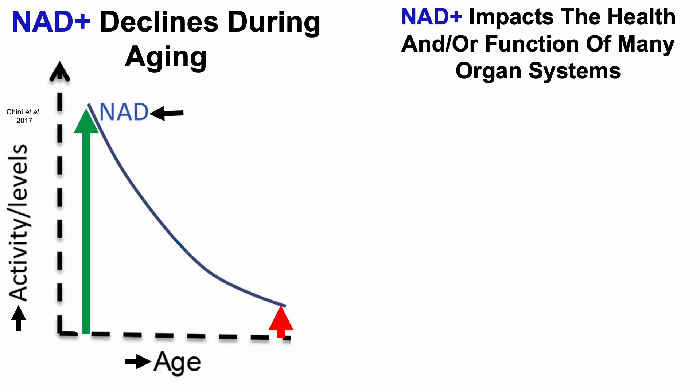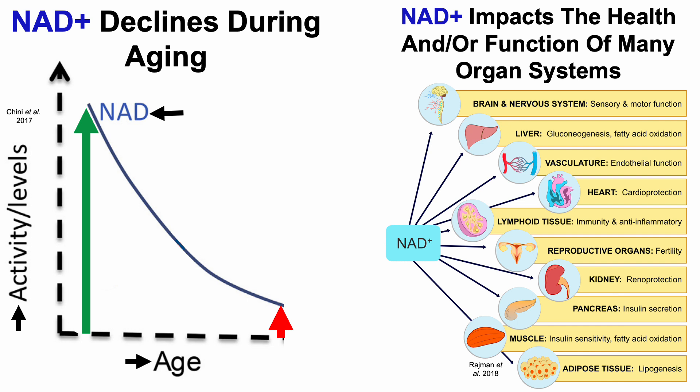That's important because NAD impacts the health and/or function of many organ systems, as shown here. Starting with NAD at the middle, we can see that NAD impacts the health and/or function of the brain and nervous system, liver, vasculature, heart, and so on down the list.